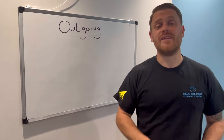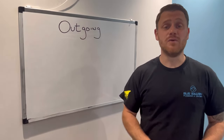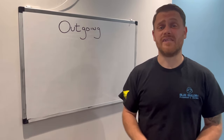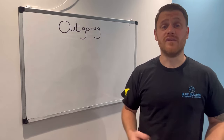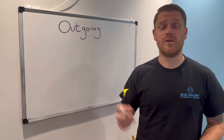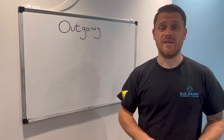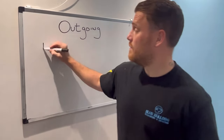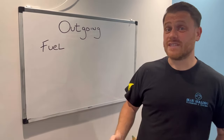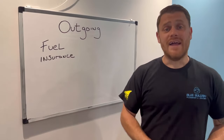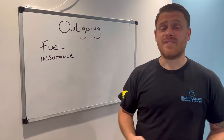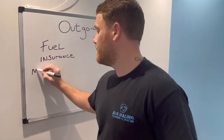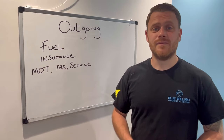The first thing you're going to look at is your outgoings — how much it costs you to run your business. Let's take a few examples of day-to-day spending. First, think about your workhorse, the van. You're going to be using that every day, so it's going to need fuel, insurance, MOT, tax, and servicing.